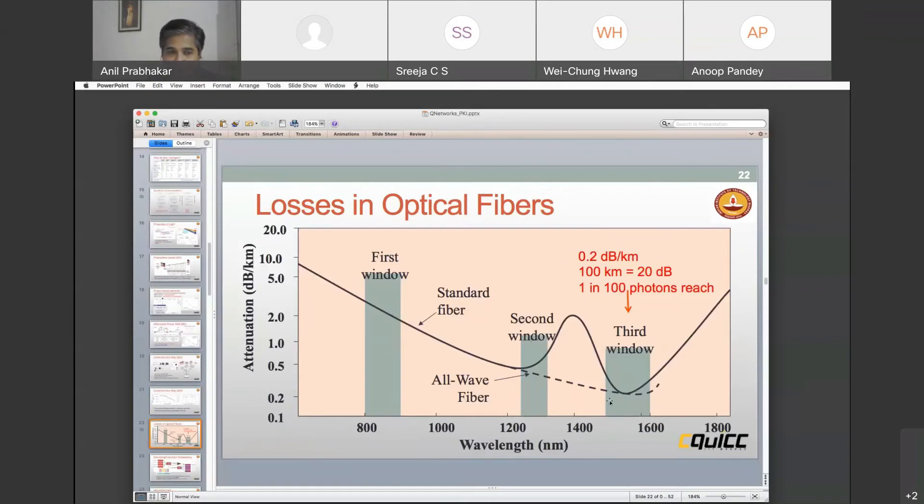Optical fibers have a loss in decibels per kilometer. We work at around 1.5 microns because at this wavelength, the loss is the minimum. But even at minimum, 0.2 decibels per kilometer means that at 100 kilometers, I have 20 decibels. To understand what a decibel means, every 10 dB is a factor of 10. So 20 decibels means a factor of 100. If I transmit 100 photons, then only one will reach. Remember my earlier example, I said if Alice sends a thousand photons, only 100 will reach Bob. That means a 10 decibel loss. If she had 20 decibel loss, she sends a thousand photons, only 10 photons will reach Bob.